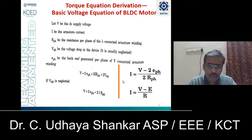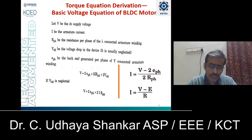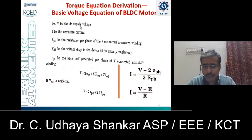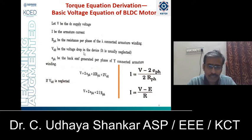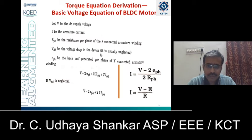Now let us go into the torque equation derivation. First, we want to derive the basic expression of the voltage equation for the BLDC machine. Let V be the supply voltage, I be the armature current, R_phase be the resistance per phase of the star-connected armature winding, and V_DD be the voltage drop in the device.